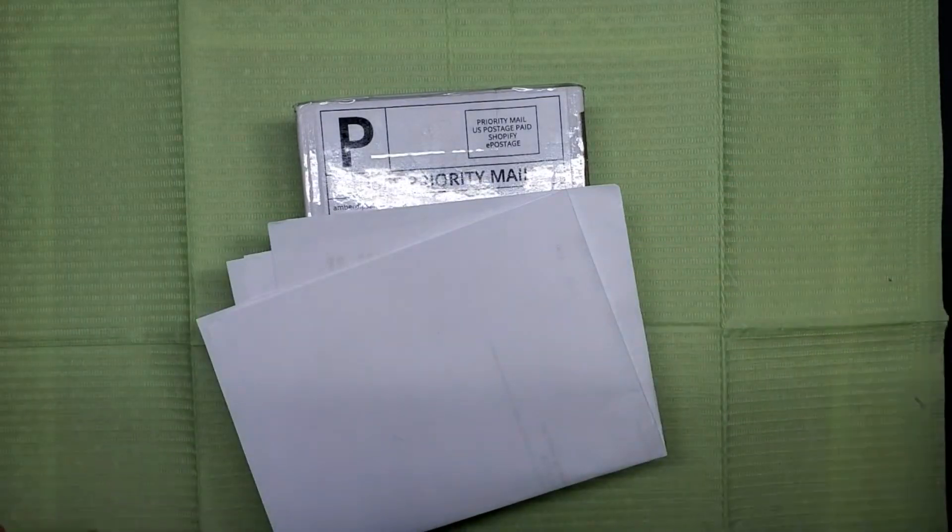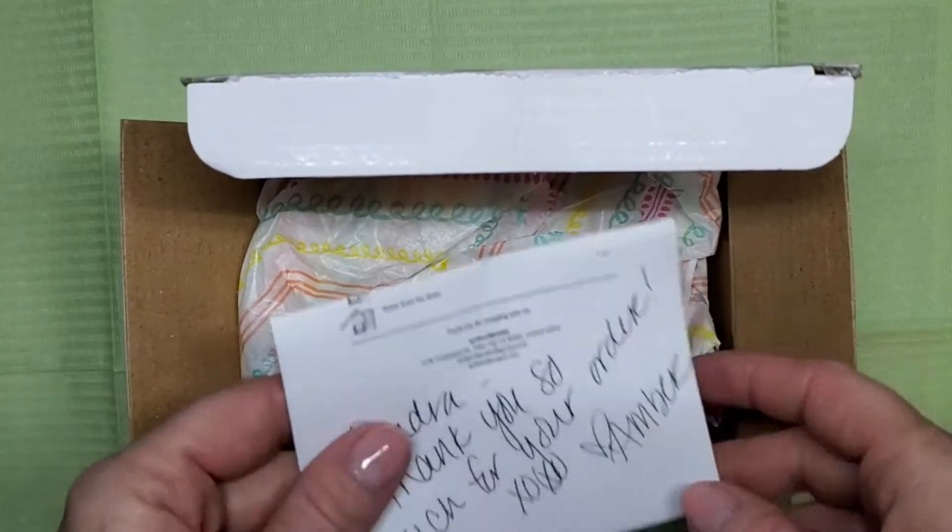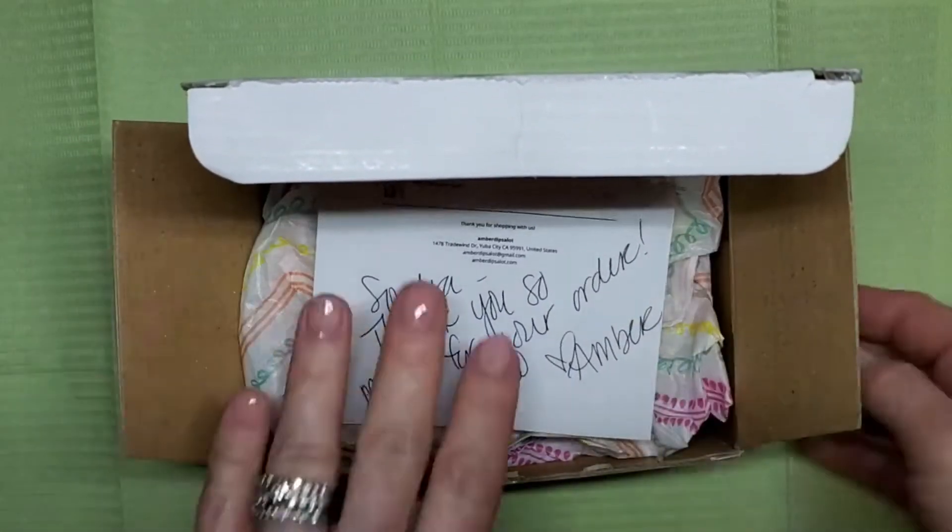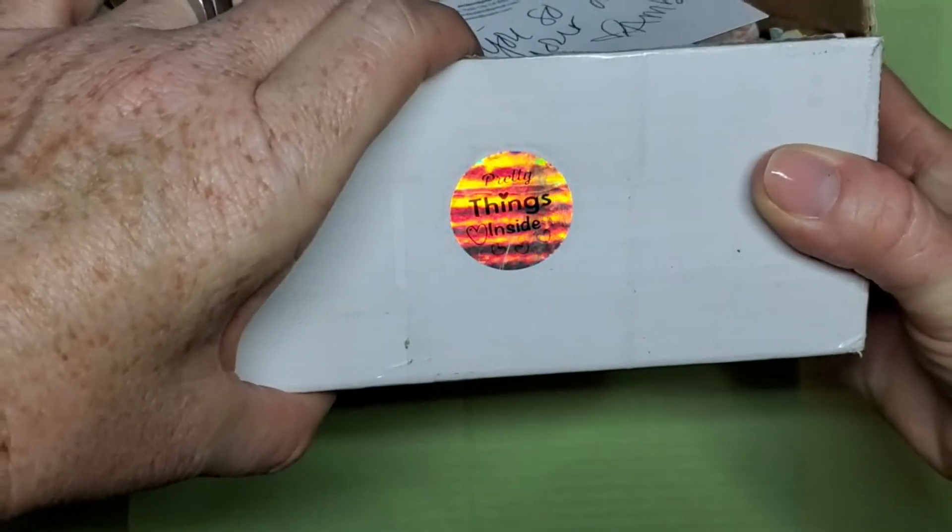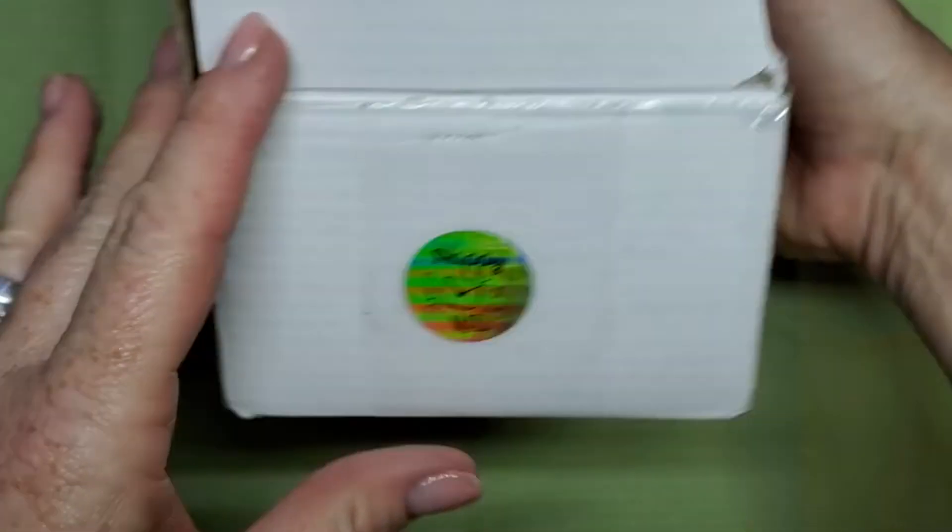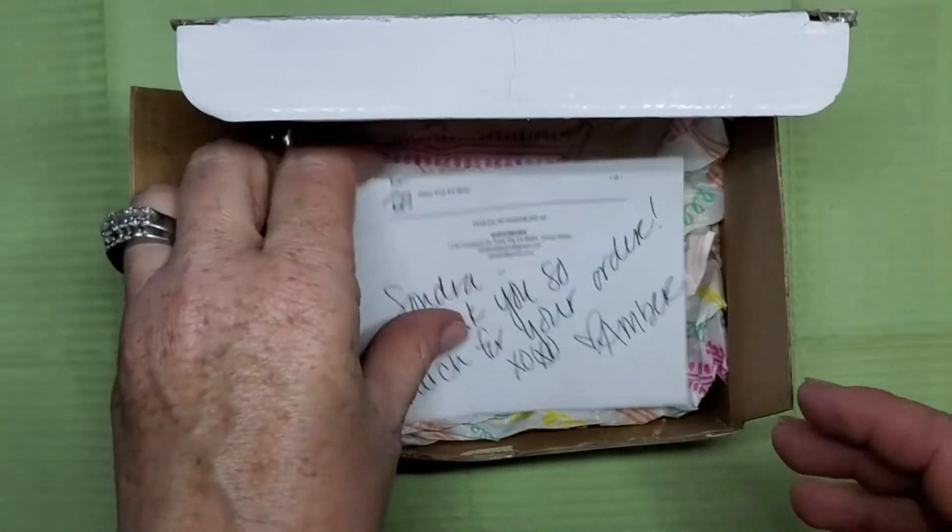All right, so this is the box here. Look at the little stickers - it says 'You've got great taste,' 'Pretty things inside,' 'Happy mail.' Love it! This is the packing slip that says 'Sondra, thank you so much for your order. XOXO Amber,' and some cute tissue paper.